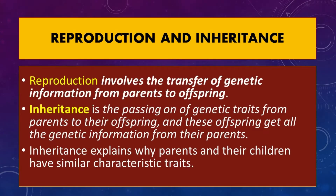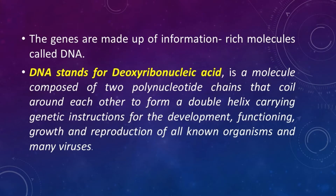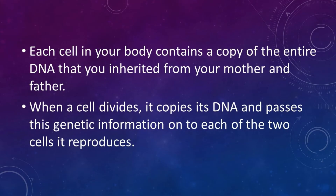The reproduction and inheritance: all living things reproduce. Reproduction involves the transfer of genetic information from parents to offspring. Inheritance is the passing on of genetic traits from parents to their offspring, and these offspring get all the genetic information from their parents. Therefore, inheritance explains why parents and their children have similar characteristic traits. The genes are made up of information-rich molecules called DNA. DNA, deoxyribonucleic acid, is a molecule composed of two polynucleotide chains that coil around each other to form a double helix, carrying genetic instructions for the development, functioning, growth, and reproduction of all known organisms and many viruses. Each cell in your body contains a copy of the entire DNA that you inherited from your mother and father. When a cell divides, it copies its DNA and passes this genetic information onto each of the two cells it reproduces.